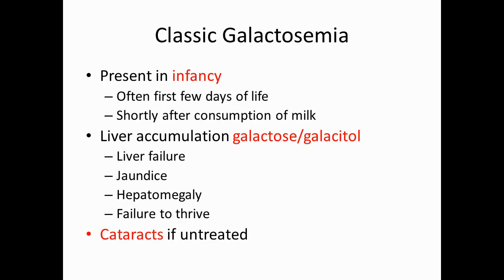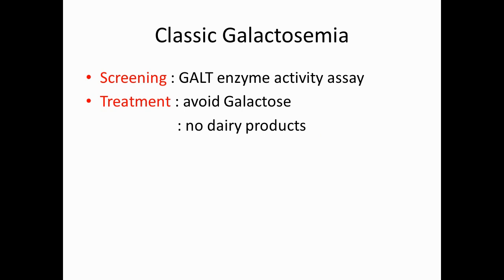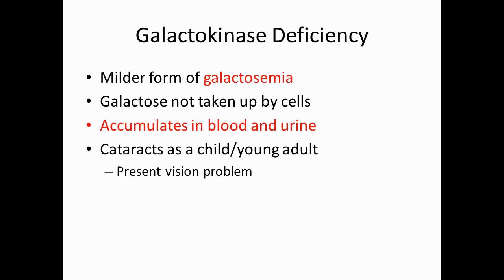Classic galactosemia typically presents in infancy, often within the first few days of life, shortly after consumption of milk, which contains lactose. Accumulation of galactose and galactitol in the liver leads to liver failure, jaundice, hepatomegaly, and failure to thrive. If left untreated, cataracts can also develop. Screening uses a GALT enzyme activity assay; treatment requires avoidance of galactose, meaning no dairy products.